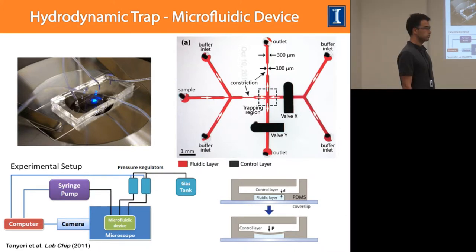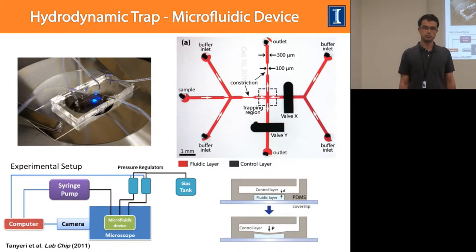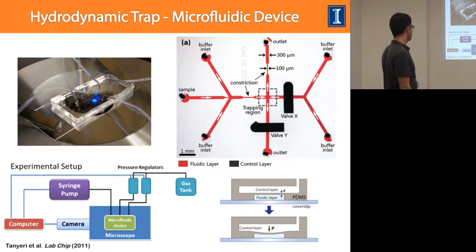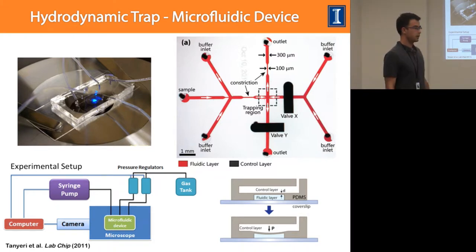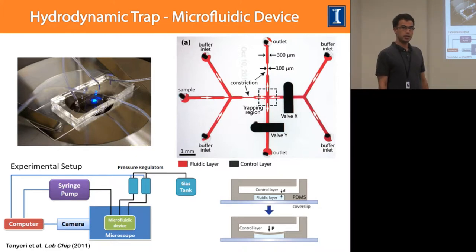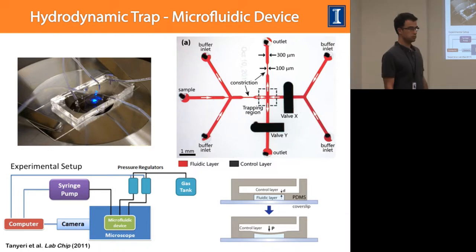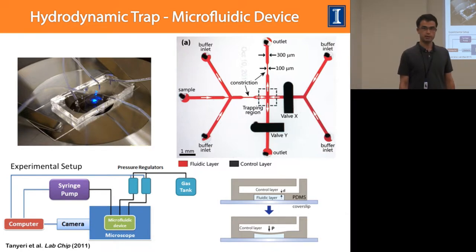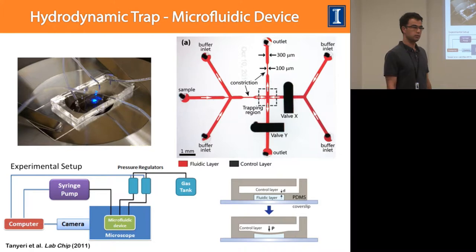The whole experimental setup — the microfluidic device — is placed on an inverted microscope stage. Everything is imaged through a camera and automated through a computer system that controls the syringe pump, the camera, and the pneumatic valves that operate the membrane valves on the chip.